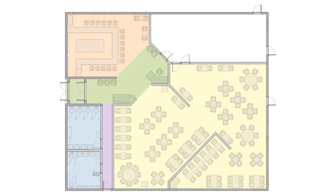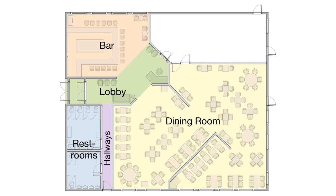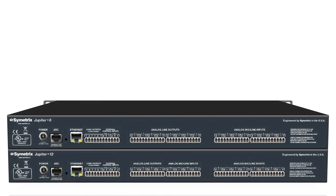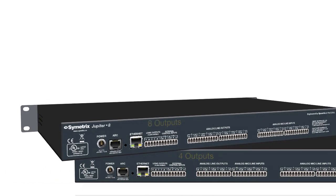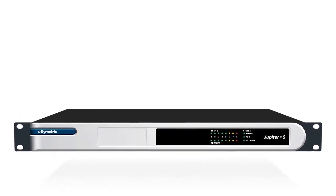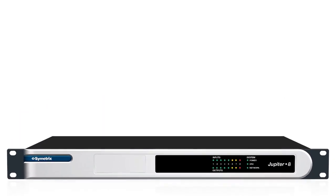For example, if you have a dining room, bar, lobby, hallways, and restrooms, that would be 5 output destinations. In this case, the Jupyter 12 would have too few outputs, making the Jupyter 8 the best hardware choice.